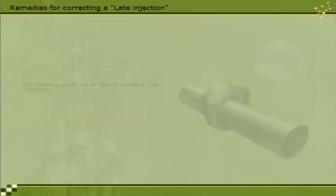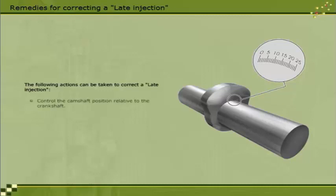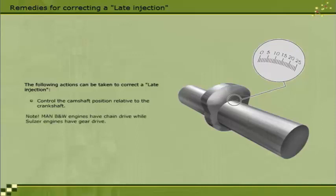The following actions can be taken to correct a late injection: control the camshaft position relative to the crankshaft. Note that MAN B&W engines have chain drive, while Sulzer engines have gear drive.